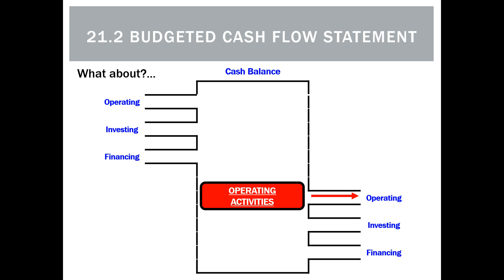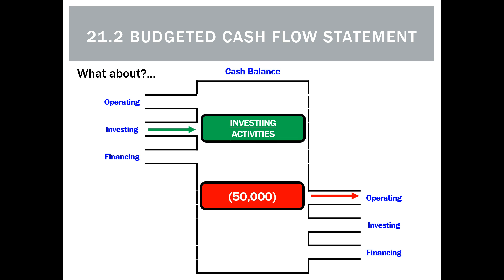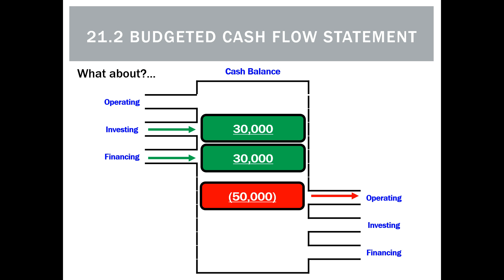The worst possible situation is a net cash outflow from operating — we can't make money from our day-to-day trading. To survive and pay monthly bills, we'd have to get money from selling non-current assets, borrowing money, or getting it from the owner, all of which are terrible and unsustainable options.